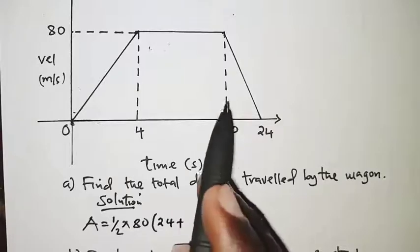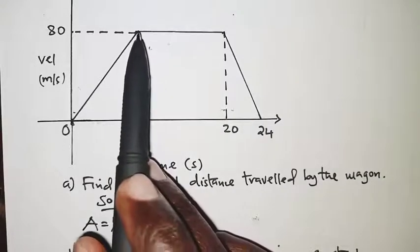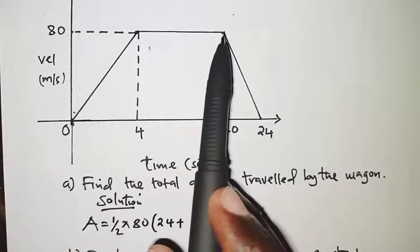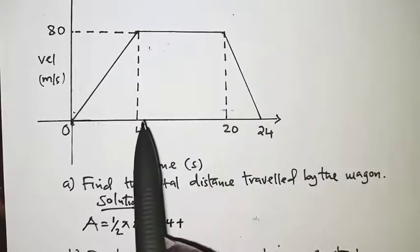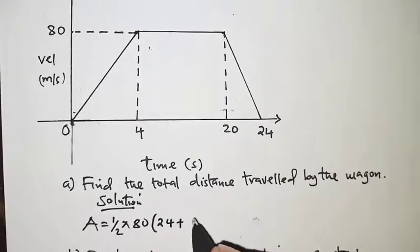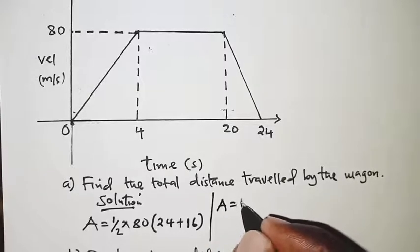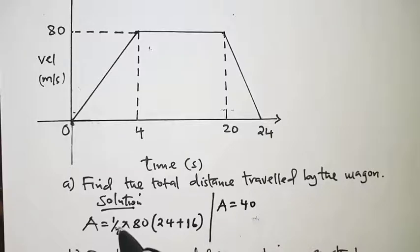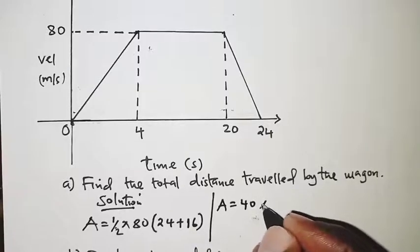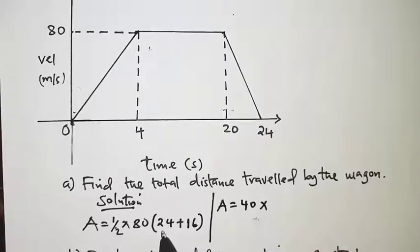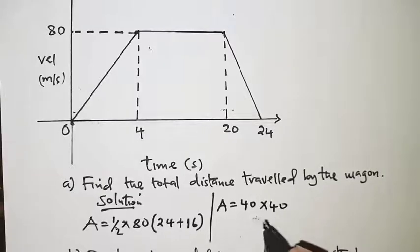The length of the two parallel sides: from here to this end we have 24, plus on the other side from this point here to this point right here should be 20 minus 4, and that is 16. So A equals 40, that is half times 80, times 40, which gives us 1600 meters.